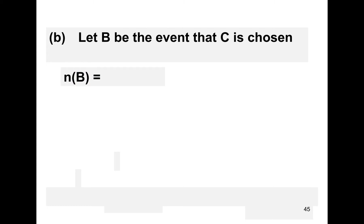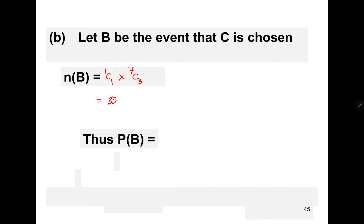For the second question, let B be the event that the letter C is chosen. The number of elements of event B: we must choose C, so that's 1 choose 1, and then we choose three more from the remaining seven letters, giving us 7 choose 3. That equals 35 ways. Thus the probability of B is 35 over 70, which equals 1 over 2.